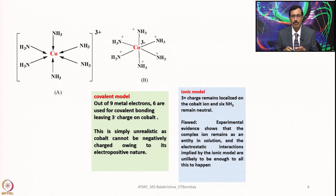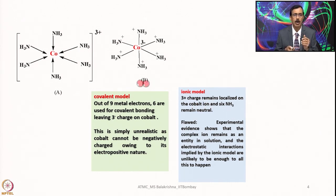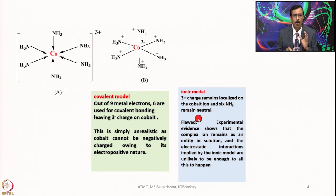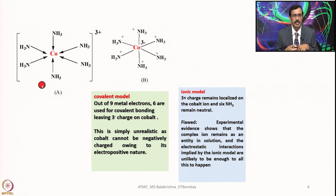Let us look into the ionic model. The ionic model assumes that the +3 charge remains localized on cobalt and the 6 ammonia ligands remain neutral. Again, this is flawed because experimental evidence shows that the complex ion retains its identity in solution — meaning a complex ion is not a double salt. The primary valence and secondary valence are clearly spelled out, and the electrostatic interactions implied by the ionic model are unlikely to be sufficient to maintain the complex.